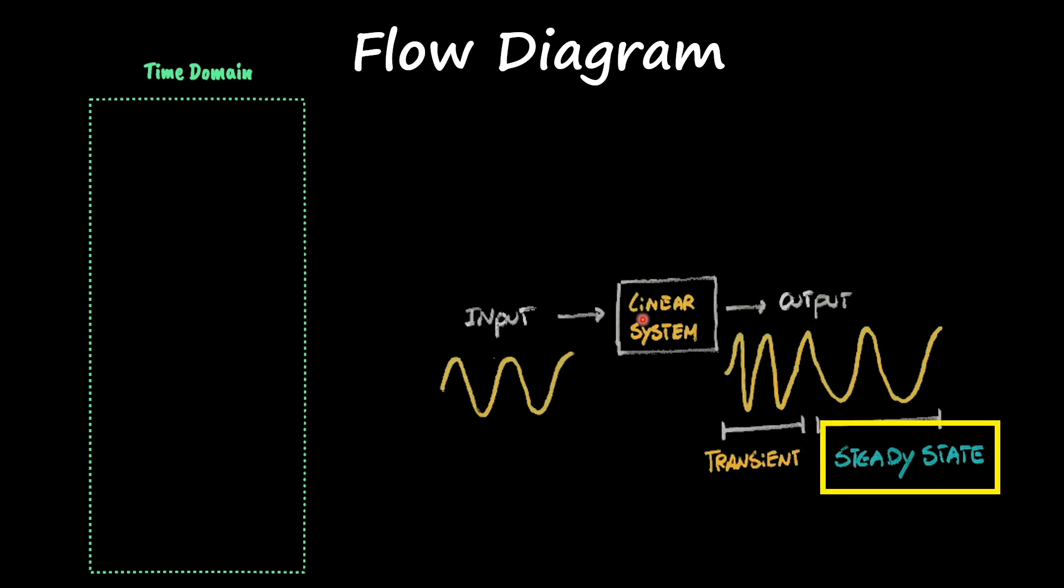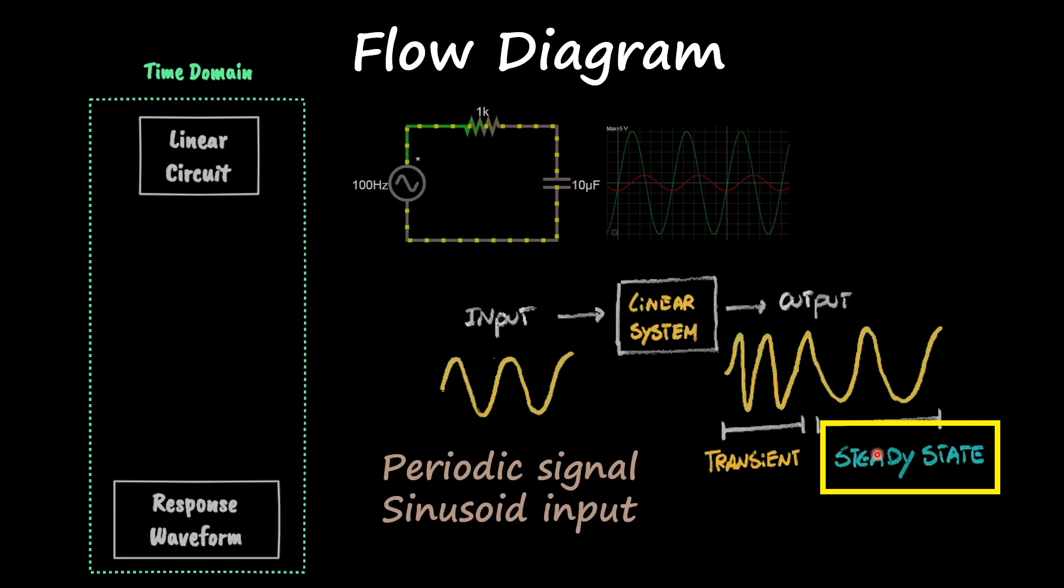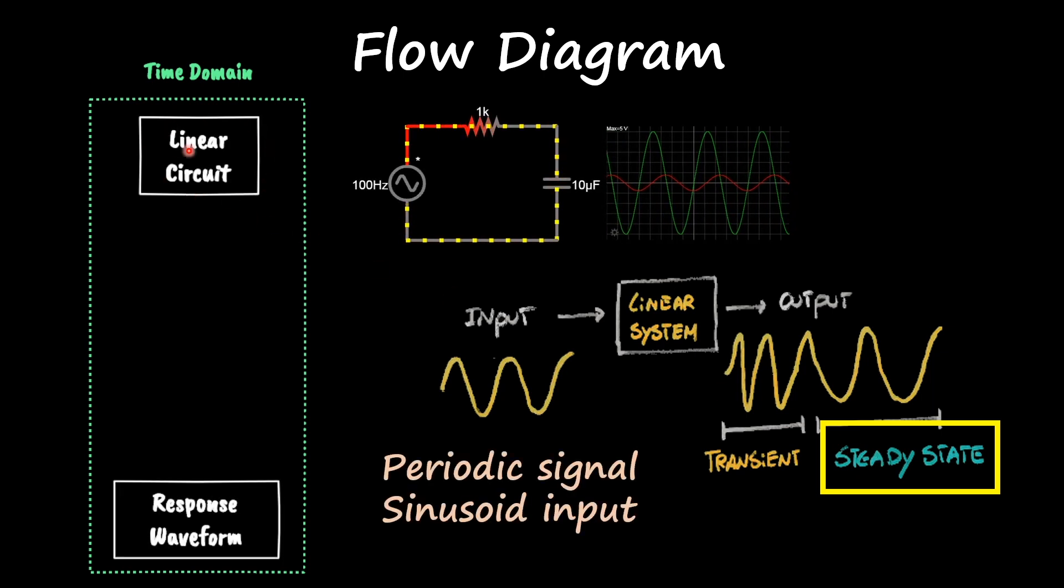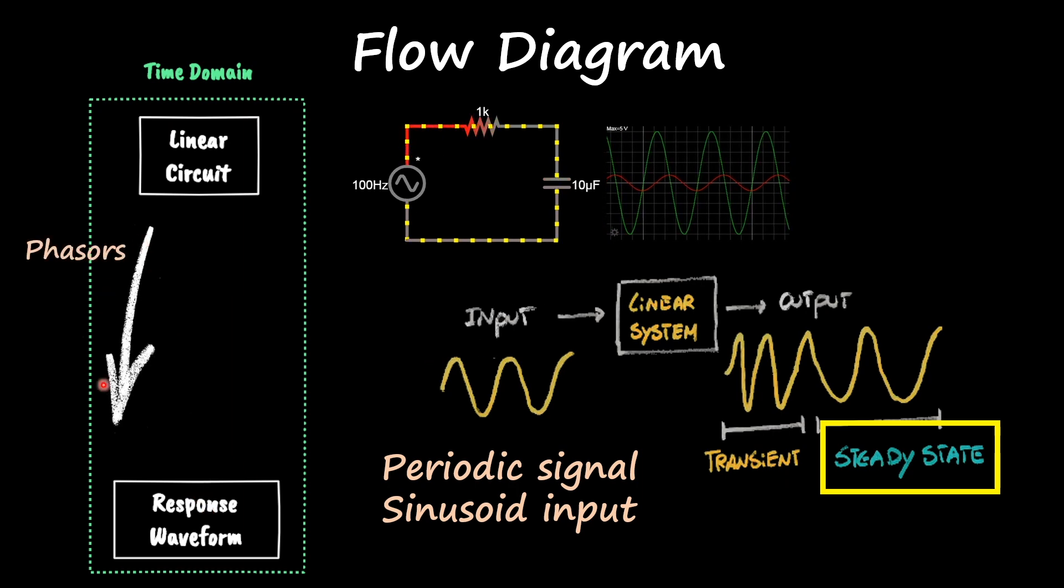And we have our linear circuits. And when that input is a periodic signal and just one sinusoidal input, in order to get the answer that we're looking for, we use phasors.